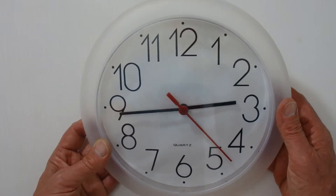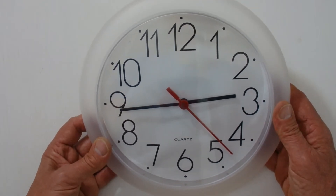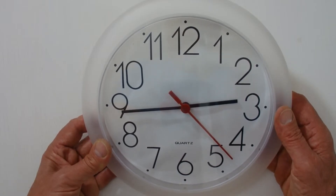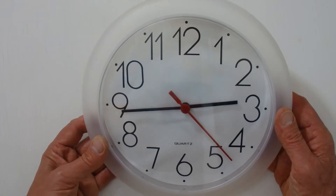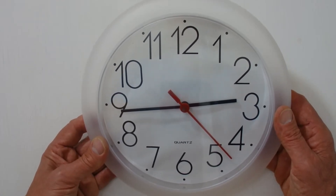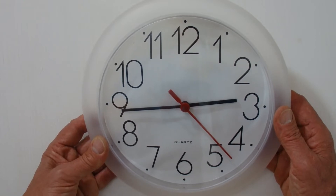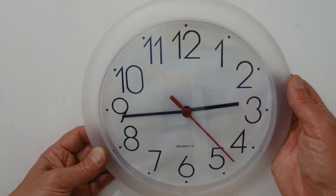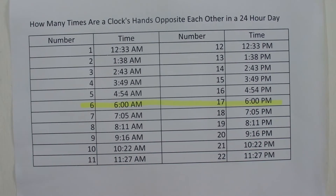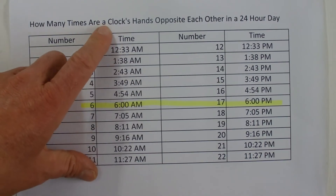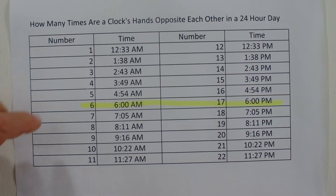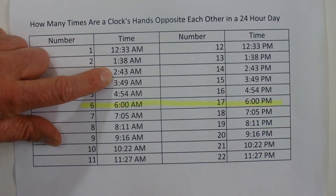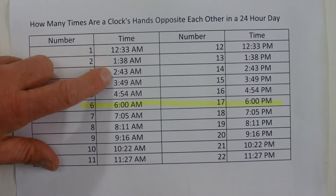In a 24-hour day there are 22 lots of 65 or 66 minutes, which means there are only 22 opportunities for the hands on the clock to be opposite. Now I'm going to show you a simple grid that will help explain it further. This is the simple grid of all the times that a clock's hands are opposite each other in a 24-hour day, starting at 12:33, 1:38, and 2:43 — the three times I showed you on the clock.